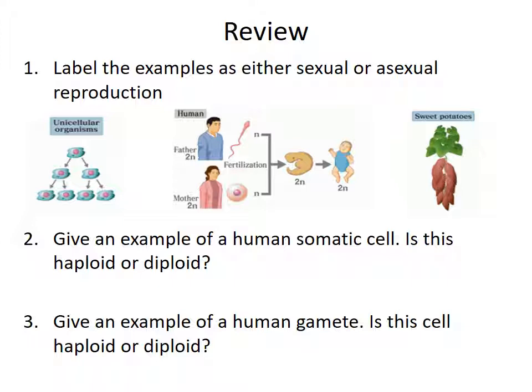The first question asks us to label examples as either sexual or asexual reproduction. In the first example, we've got a unicellular organism splitting into two cells, and then those two cells splitting into four cells. That's going to be asexual reproduction. While some unicellular organisms can do sexual reproduction, this is just one cell going into two, so this is asexual.